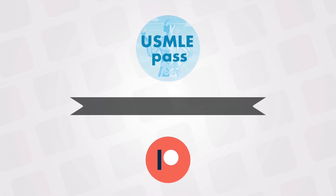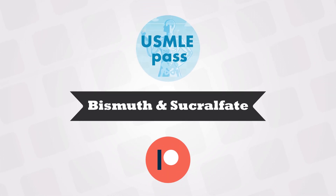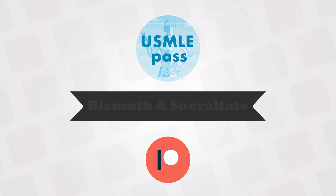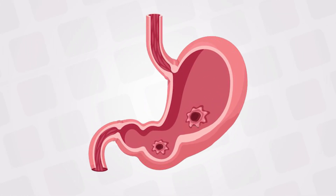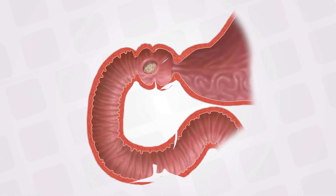Welcome back. In this video we'll talk about bismuth and sucralfate. These medications are used to treat gastric ulcers. They can also be used to treat peptic ulcers or ulcers in the duodenum.